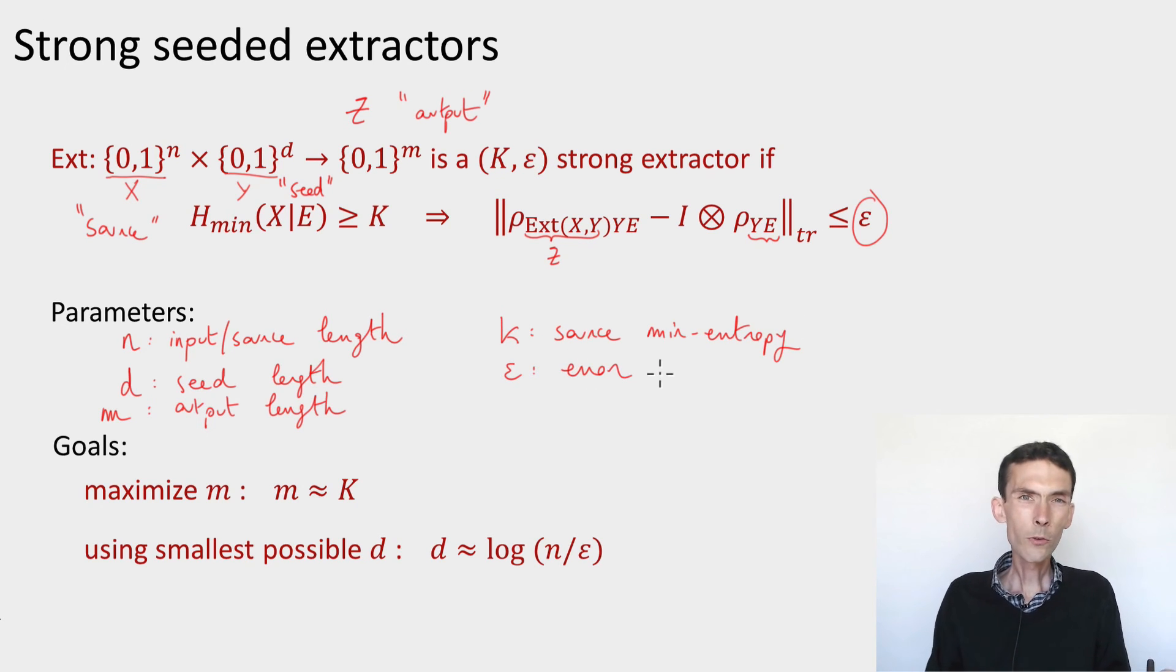And so the goal is to come up with constructions of extractors that sort of get the best parameters possible. So what do we wish in general? So the input length n is just going to be a given. That's the size of the weak secret that we start with. So we just think of it as some large parameter, but we have no control over it. Now K is a promise. It's a guarantee on the min entropy of this input. So we don't have any control on it either.